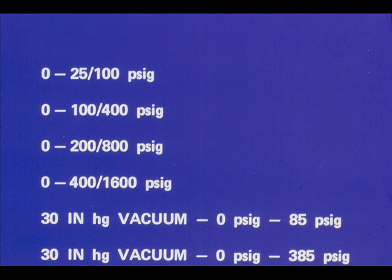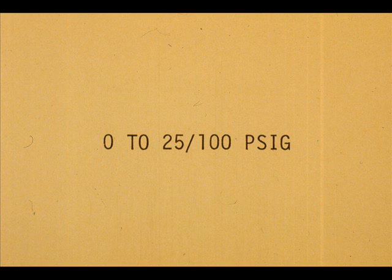The ranges available for the 56PM are shown here. The two numbers give the minimum and maximum range for a given measuring head. For example, the 0 to 25 slant 100 PSIG assembly can be calibrated for a minimum span of 25 and a maximum span of 100 PSIG.